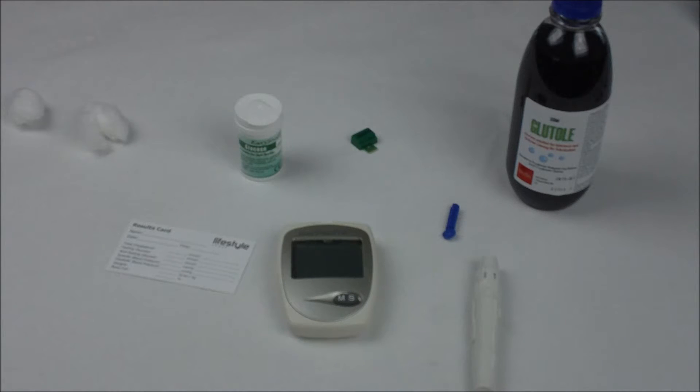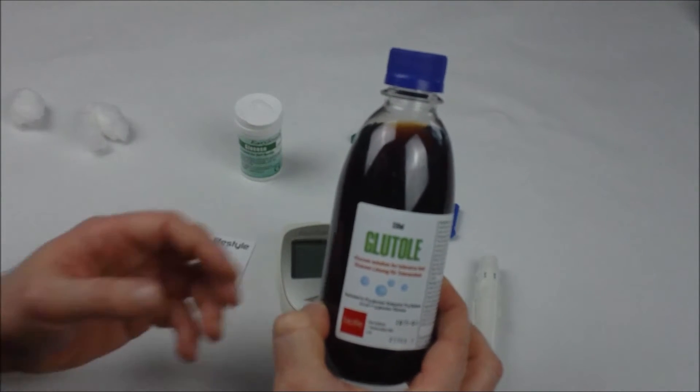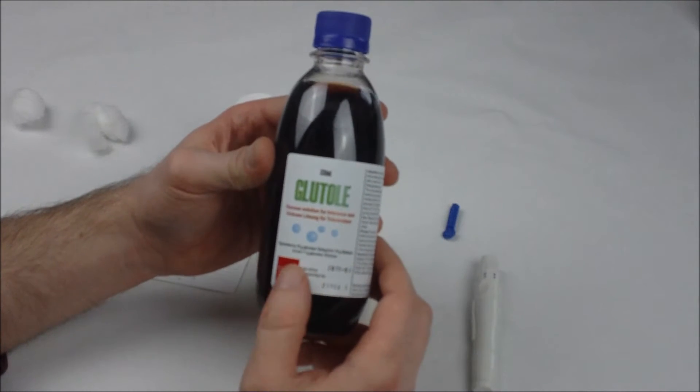This next video is going to show you how to measure your blood glucose level after you've consumed some sugar. And that sugar is contained within the glutol drink. So glutol is a cola flavoured drink which contains a known amount of glucose, 75 grams.